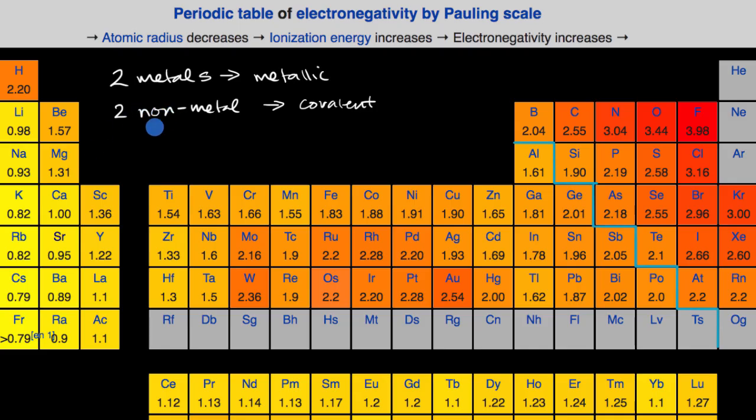And the general rule of thumb is if you have one metal and one non-metal, that this is likely to be an ionic bond. These are the general rules of thumb.